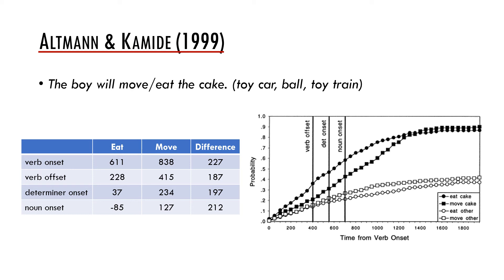In the plot there is the cumulative probability of fixating the cake as a target object or other objects as distractors. We can see that in the sentences with 'eat' there is a higher probability to fixate the cake already on the offset of the verb, and it continues to be higher even sometime after the noun onset. This is a clear demonstration of predictive processing. Participants are fixating the cake earlier when they hear the sentence 'the boy will eat the cake' because they predict the sentence ending based on the verb.